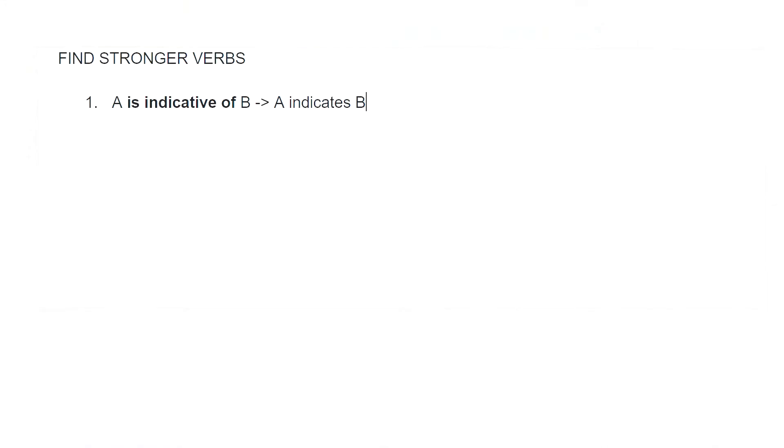This is why 'indicates' is a strong verb, whereas 'is' or any form of 'to be' is a weak verb. You should go through your text and find the instances where you use any variation of 'to be' and see if you can replace it with a better verb. So: 'A is indicative of B' simply becomes 'A indicates B.'